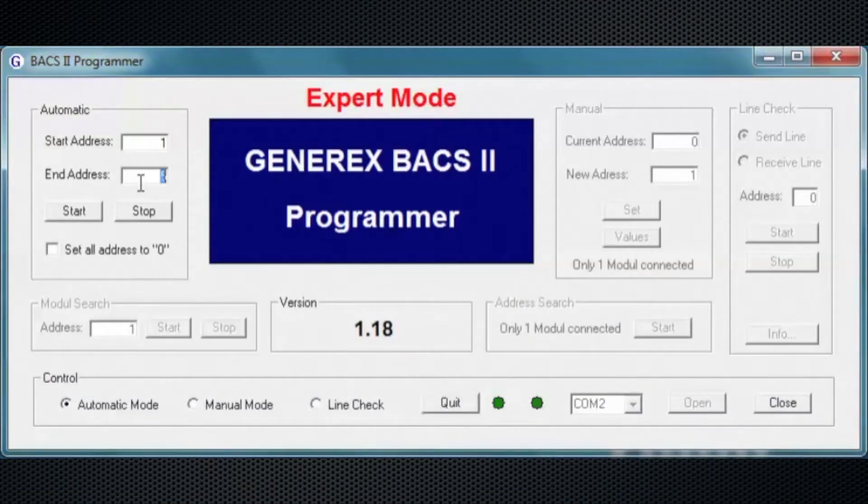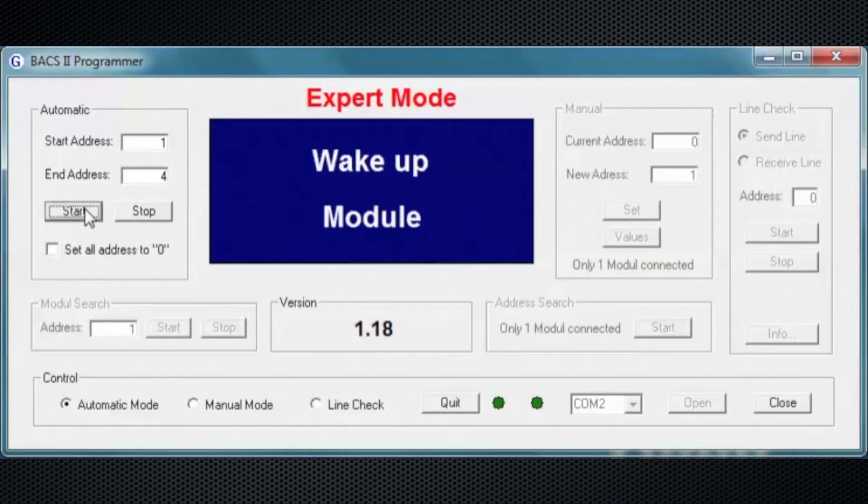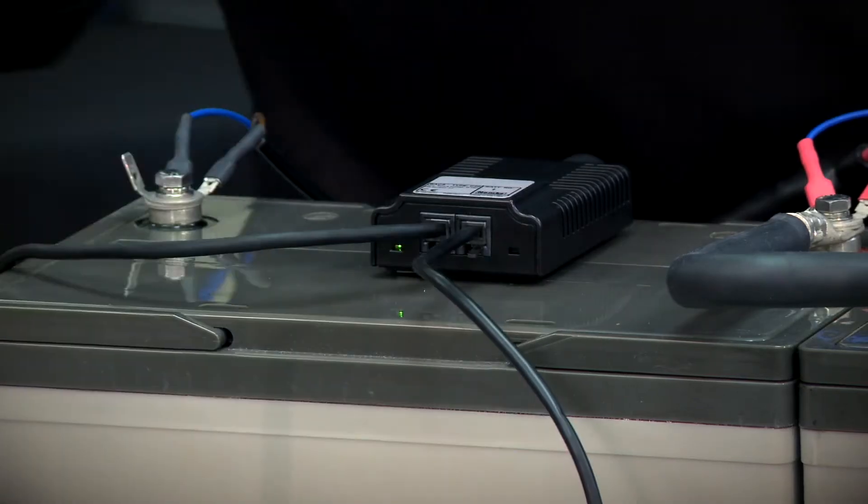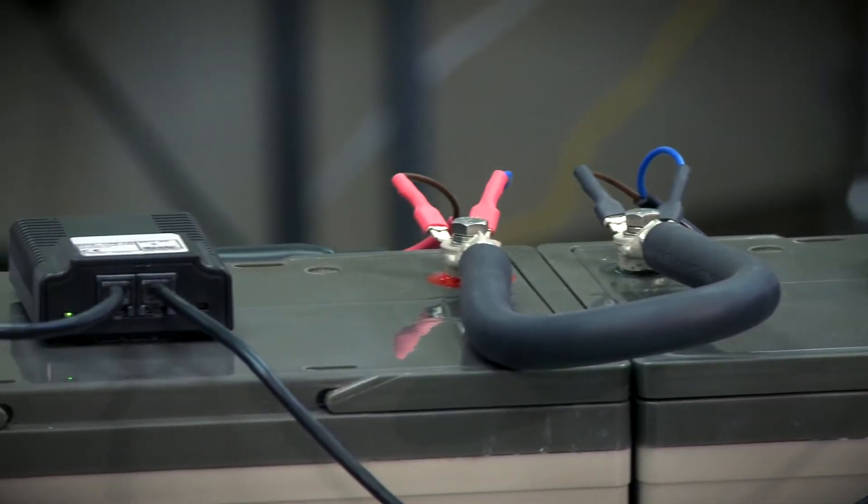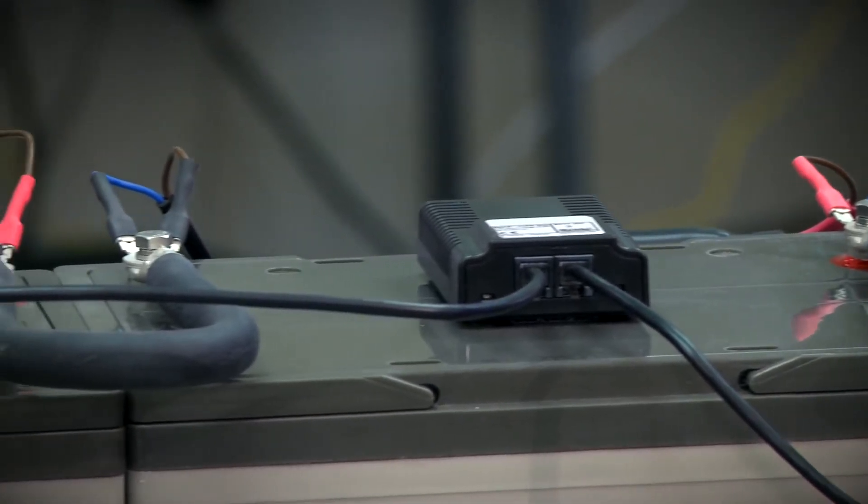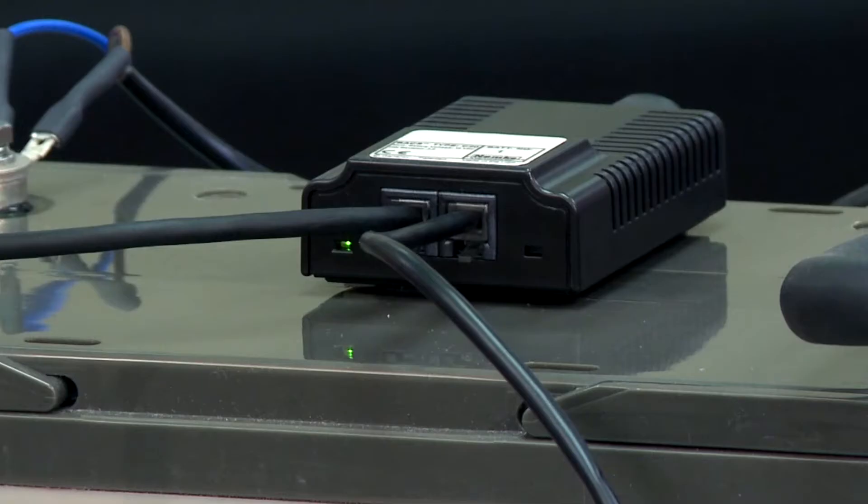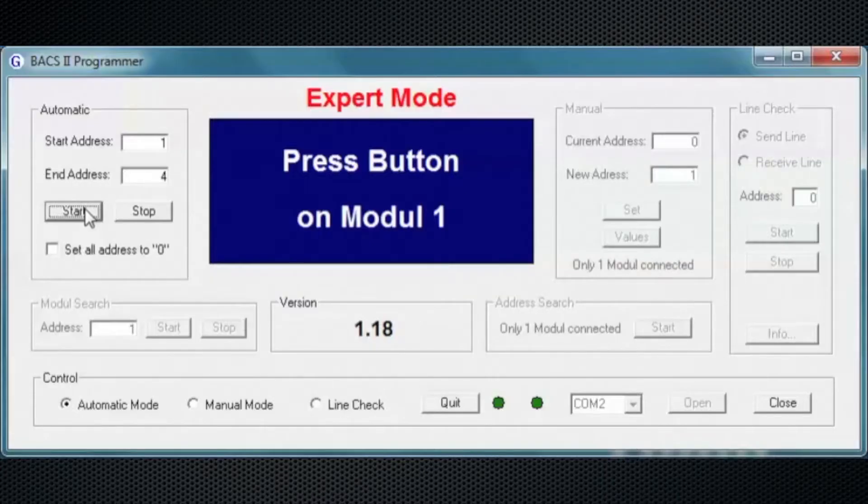This section is showing the Bax programmer. Enter the start and end address of each module. Each module wakes up and the technician will press the button on module one. Once the Bax web manager is connected to the modules, the modules will switch from a blinking green to a solid green. You'll get an audible confirmation and move to the next module. Then you'll press the button on module two, module three, and module four.